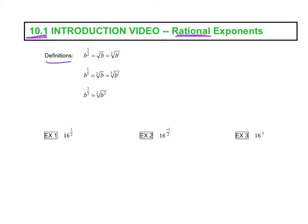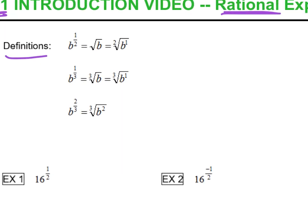A couple definitions we want to know about right here. If you notice, you do have a base, b, and our exponent is to the one-half. So when you have a rational exponent, or an exponent that's a fraction, you want to think about the top number as being the power, and the bottom number as being the root that you're taking.